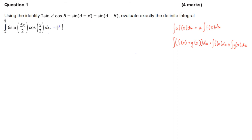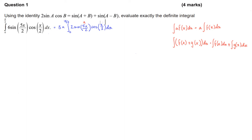This equals three multiplied by the integral from zero to pi over two of two sine of five x on two, cos of x on two dx. Now we have an identity exactly the same as the one in the hint. We have a two, a sine, a cos, and then an a and a b. Here, a is five x on two and b is x on two.